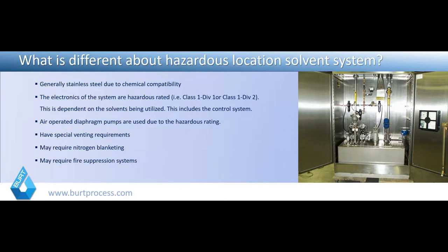When talking about hazardous location solvent systems — whether process feed, collection, or transfer — they're generally going to be stainless steel, rated Class 1 Div 1 or Class 1 Div 2. That rating can vary depending on proximity to the system. Pneumatics and air-operated diaphragm pumps are commonly utilized. It's very important to avoid the use of 460-volt power in these systems if at all possible. There may be special venting requirements, nitrogen blanking or purging, as well as fire suppression systems.